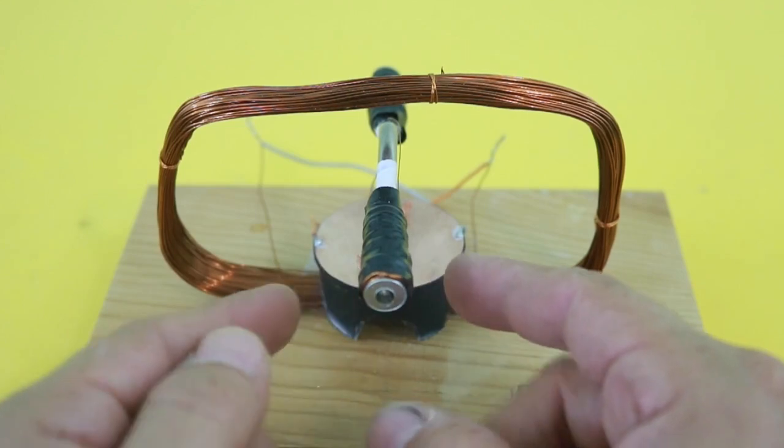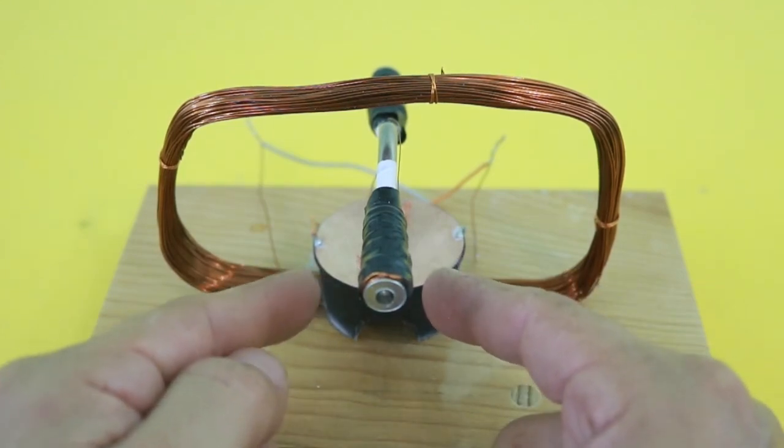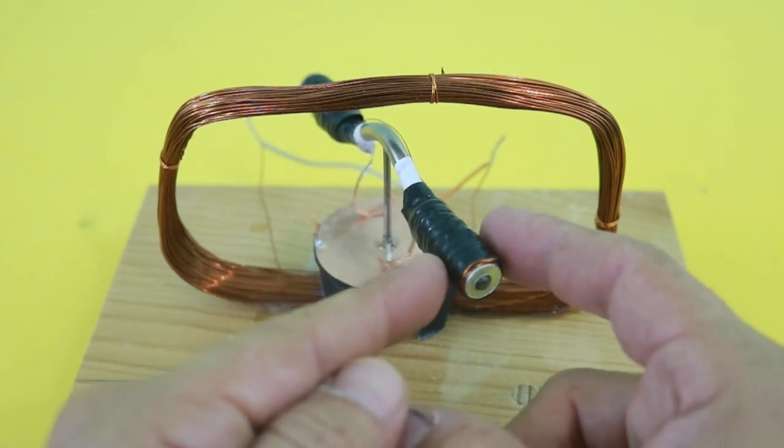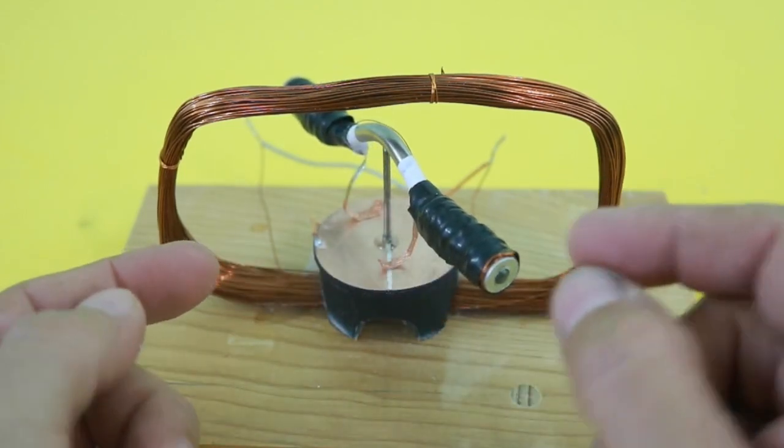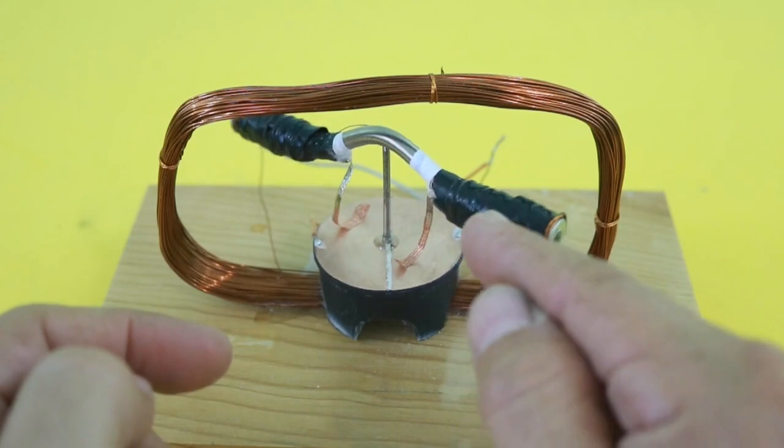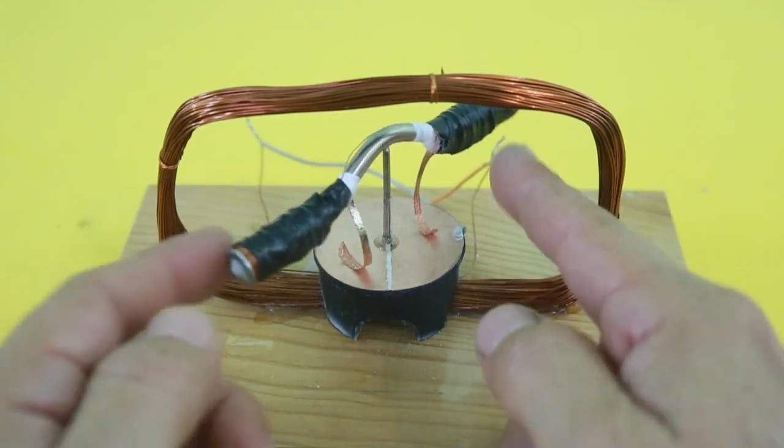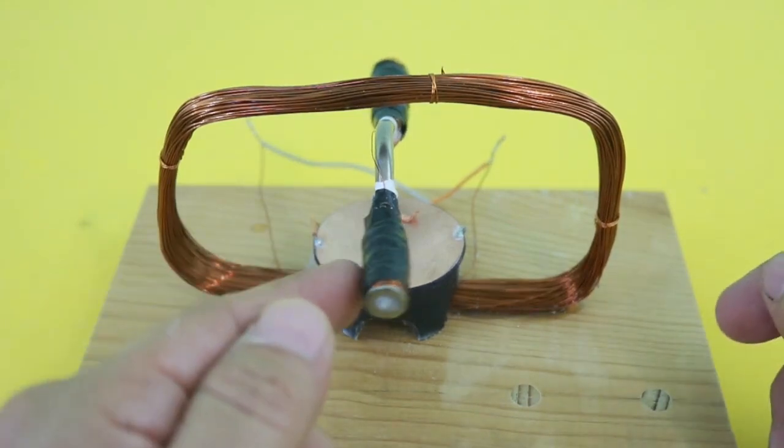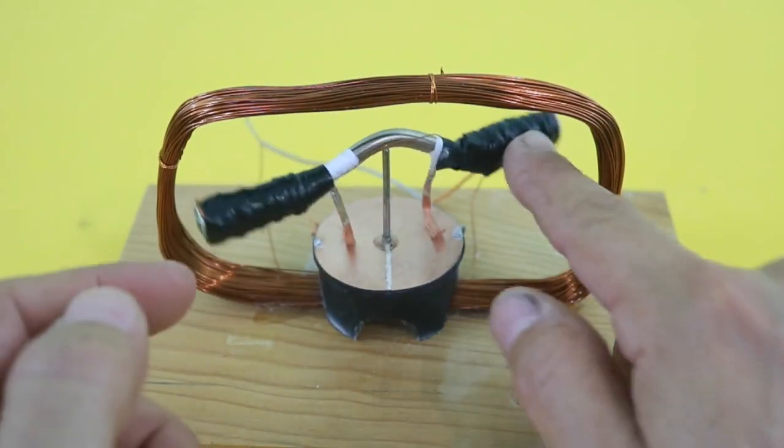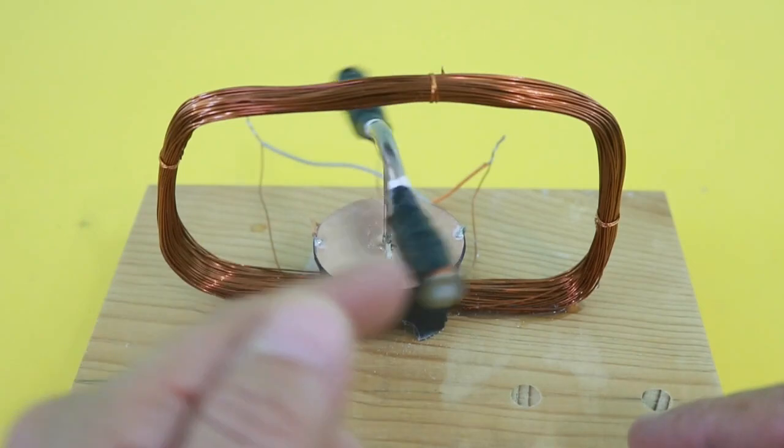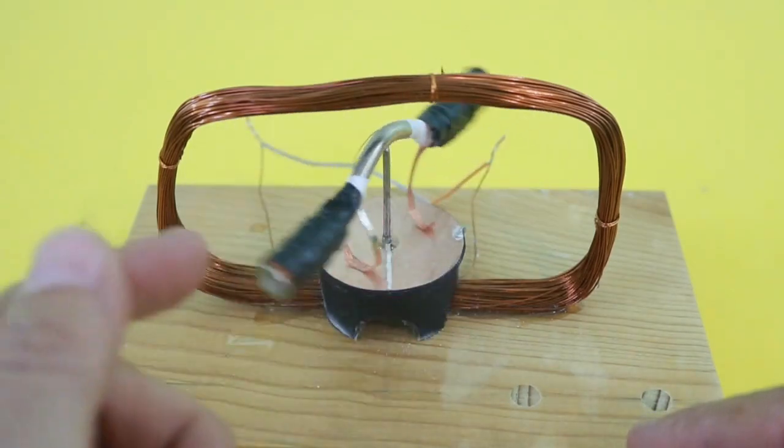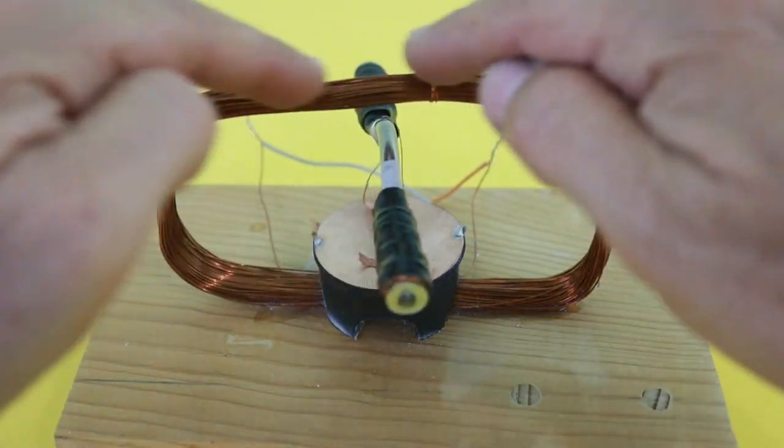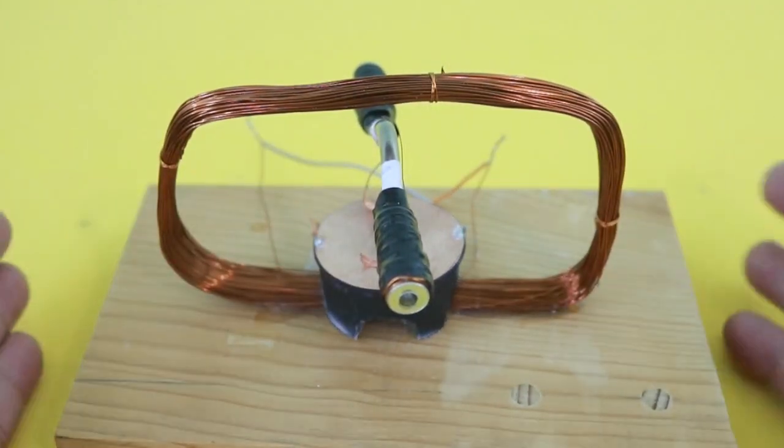But at this point the commutator again changes the polarity. The rotor continues to move because of its inertia. The polarity is changed and the rotor moves again trying to align with the magnetic field. In this way the rotor continues to move and a permanent rotation is obtained because the rotor is constantly trying to align with the magnetic field of the external coil.